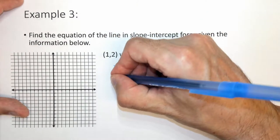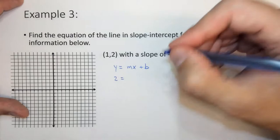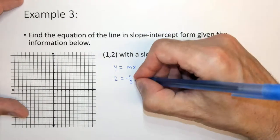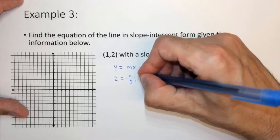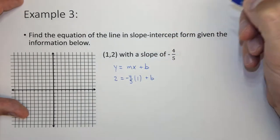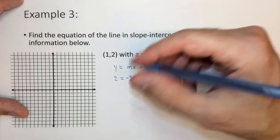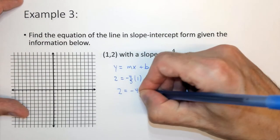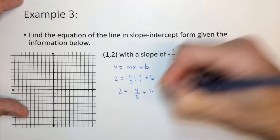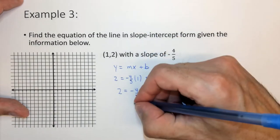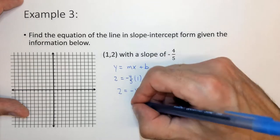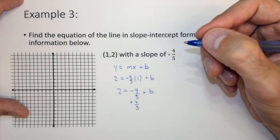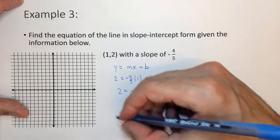So we know that there's one of the points on this line, y equals 2, m is negative 4 fifths, and x is 1 plus b. So in this case, 1 times negative 4 fifths is just negative 4 fifths. So 2 equals negative 4 fifths plus b.